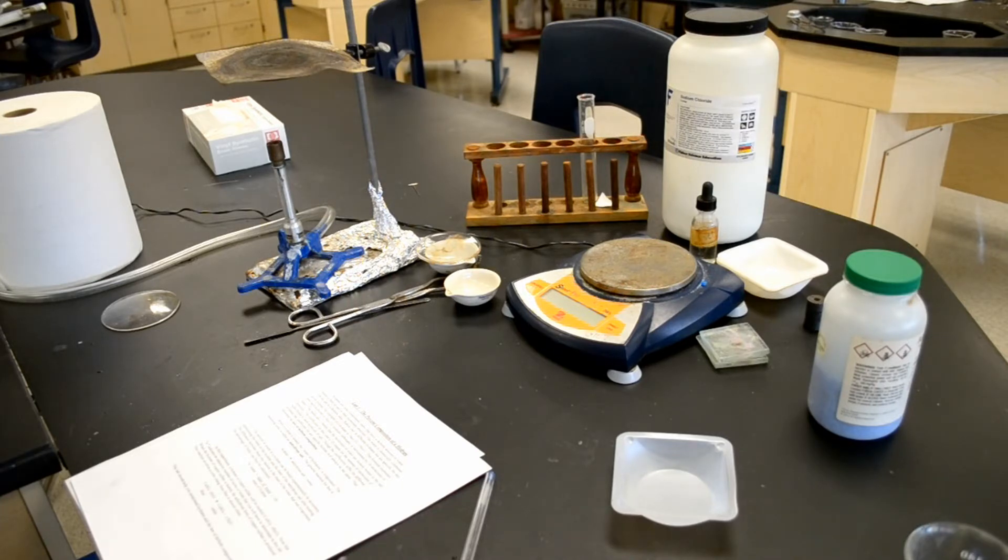In this experiment, a hydrate of copper sulfate will be studied. CUSO4·XH2O. Note that the X indicates the unknown number of molecules of water that you will have to determine in this lab.